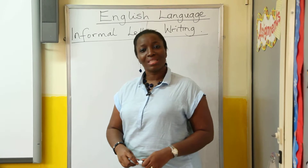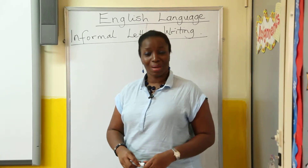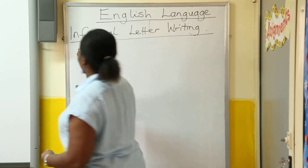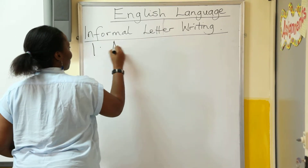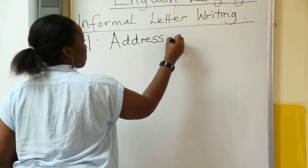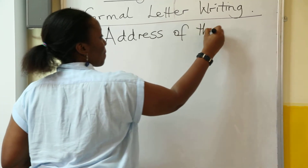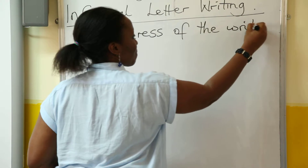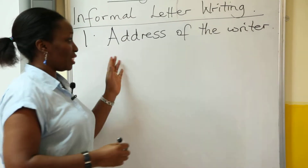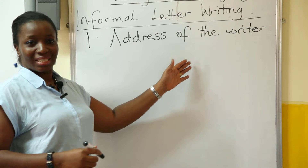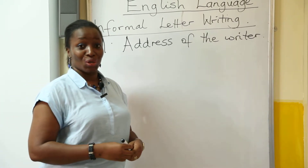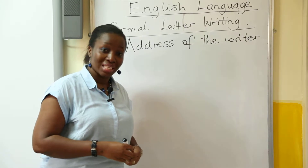The first thing you do when you write an informal letter is to state your address. Since you are the writer, you have to state your address so your mom, your dad, your brothers, your uncle or your aunts would know where you are writing from.